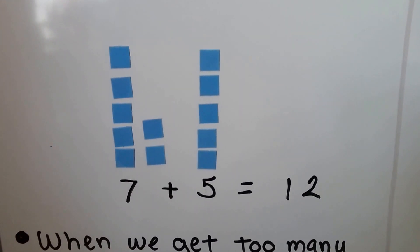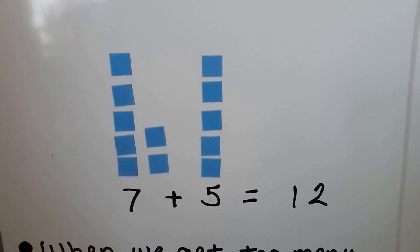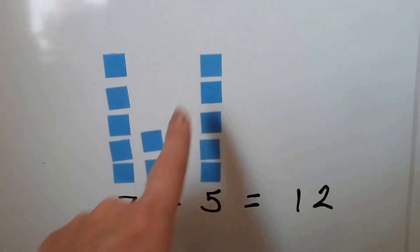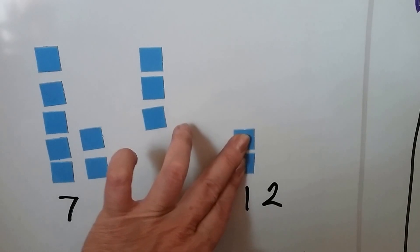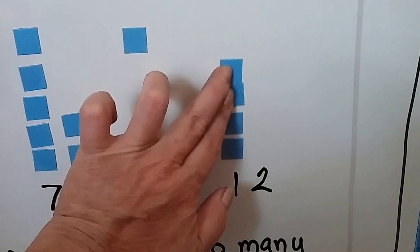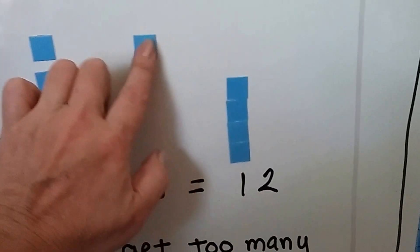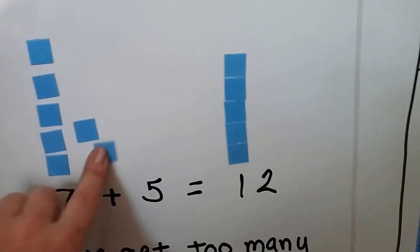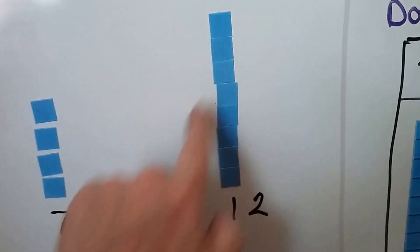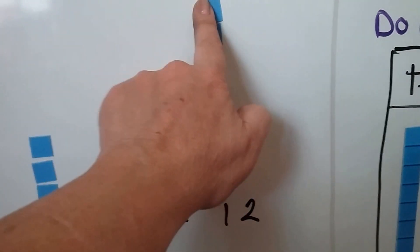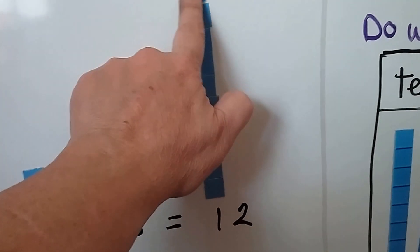So if we have 7 plus 5, we can make a 10 from all these single units. 1, 2, 3, 4, 5, 6, 7, 8, 9, 10.